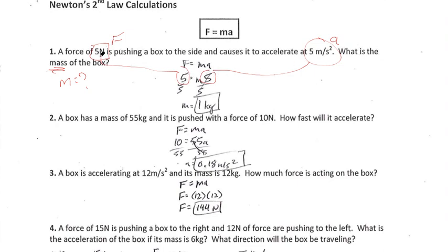These aren't normally going to be the same — it's just happenstance that in this particular problem they happen to be the same number. Remember, anytime we're trying to solve for a problem, we're trying to get the variable on its own. So I am taking this m and multiplying it by 5. To get m by itself, I'm going to get rid of the 5 by dividing by 5, so I get this to cancel. If I do it to one side, I've got to do it to the other side. 5 divided by 5 leaves me with 1, and m is on its own. So we have mass is equal to 1.